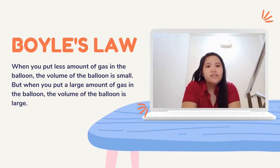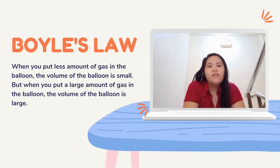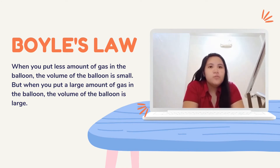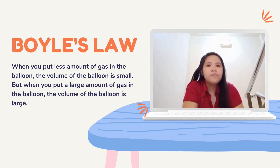In 1662, Robert Boyle discovered that volume is inversely proportional to pressure with constant temperature. Today, we now know it as the formula for Boyle's Law.